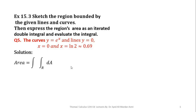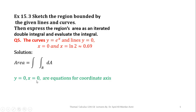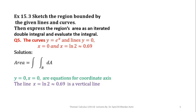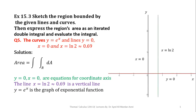In the next step we will identify these lines: x = 0 and y = 0 are the equations of the coordinate axes. y = 0 is the equation of the x-axis, and x = 0 is the equation of the y-axis. So the coordinate axes are involved in my boundaries. The line x = ln(2) is a vertical line passing through approximately 0.69, and y = e^x is the graph of the exponential function.